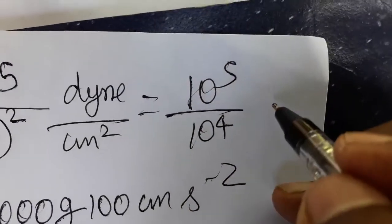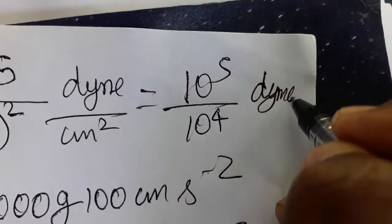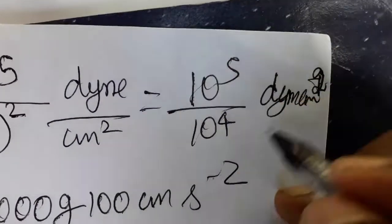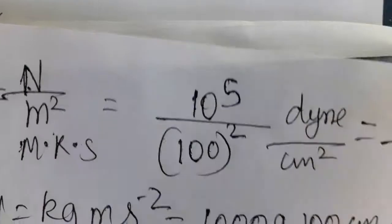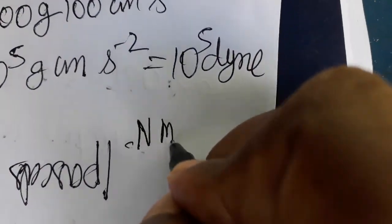So numerator ten to the power five, denominator ten to the power four. When it is canceling, will get as dyne centimeter inverse, centimeter minus two will get as ten as a relation.